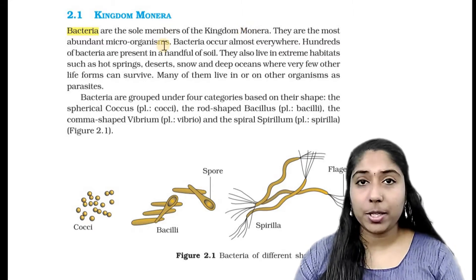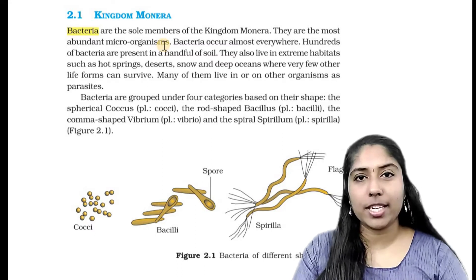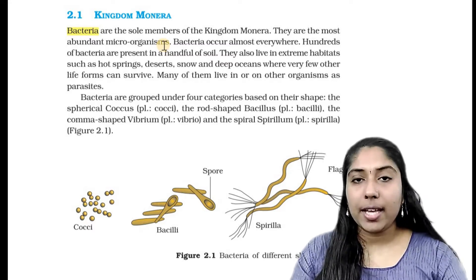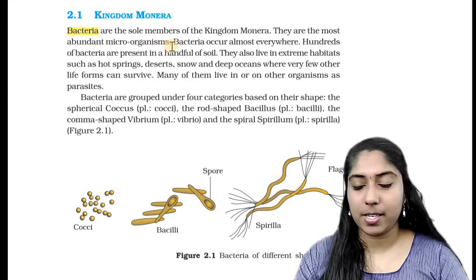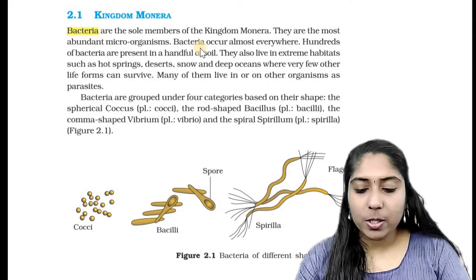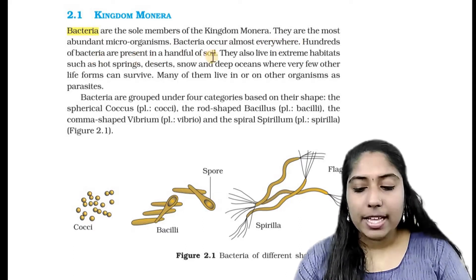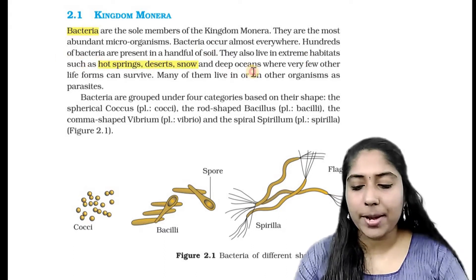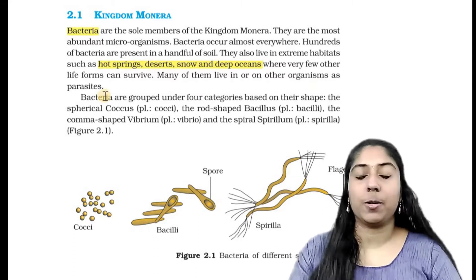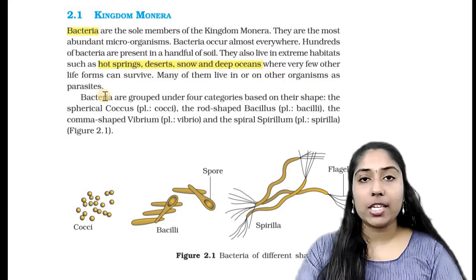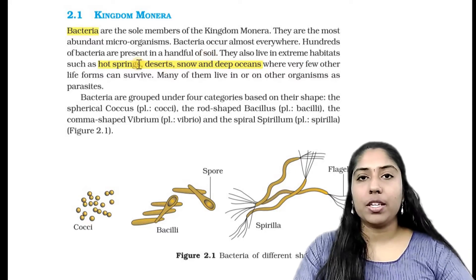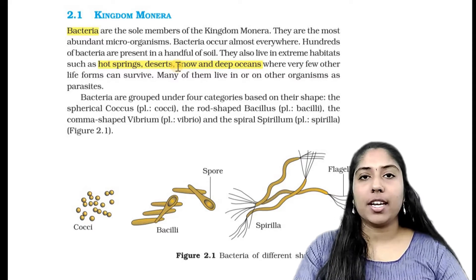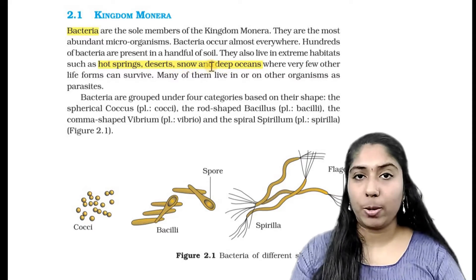Bacteria are the most abundant microorganisms in the world. They are present in a handful of soil. They also live in extreme habitats such as hot springs, deserts, snow, and deep oceans where very few organisms can survive. Many of them live as parasites.